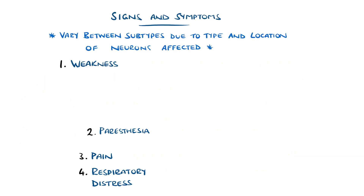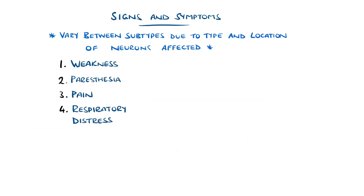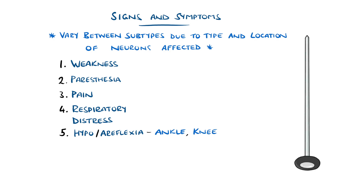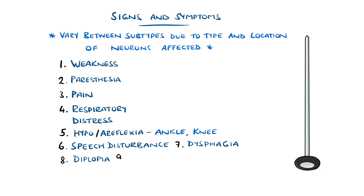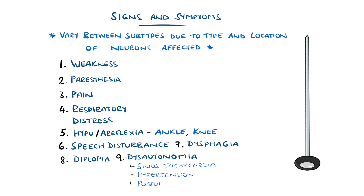The majority of cases will have absent or minimal reflexes, primarily affecting the ankle and knee, although rarely hyperreflexia can also occur. Other possible manifestations include speech slurring, dysphagia (difficulty swallowing), diplopia (double vision), and dysautonomia, where there is involvement of the autonomic nervous system, giving sinus tachycardia, hypertension, and postural hypotension.